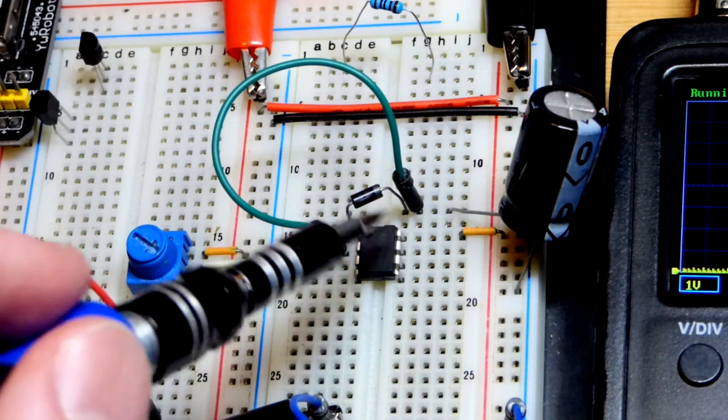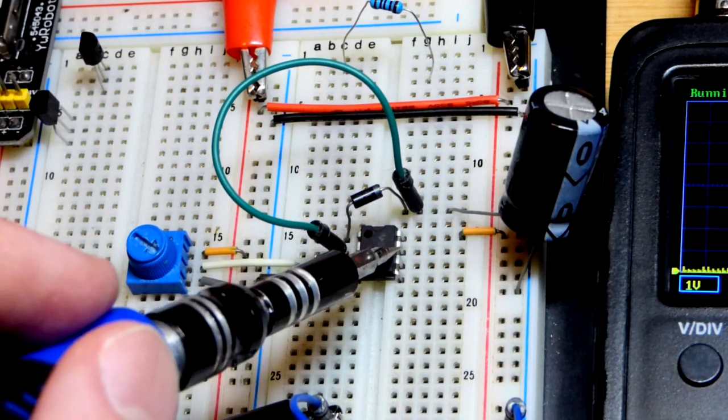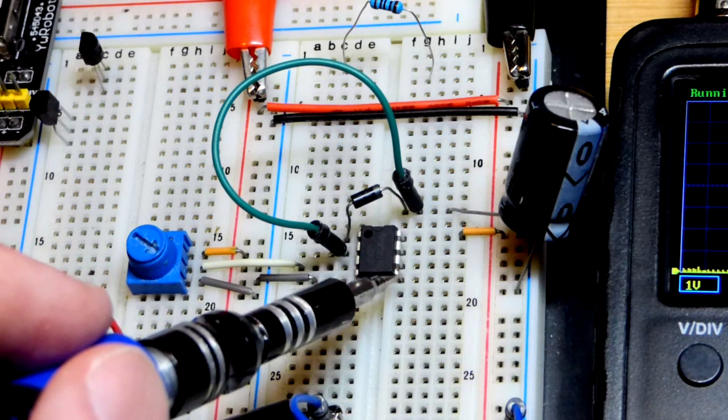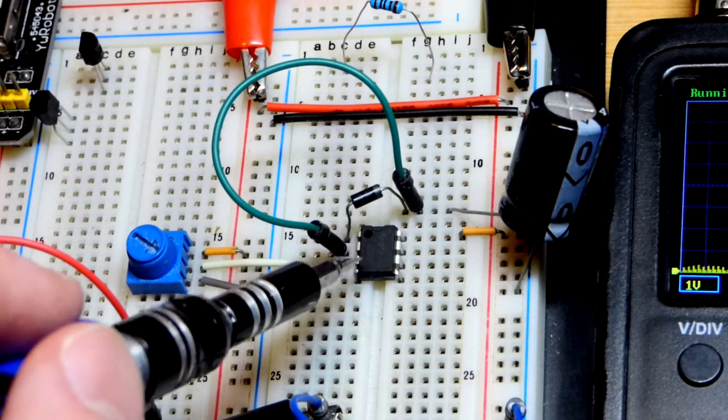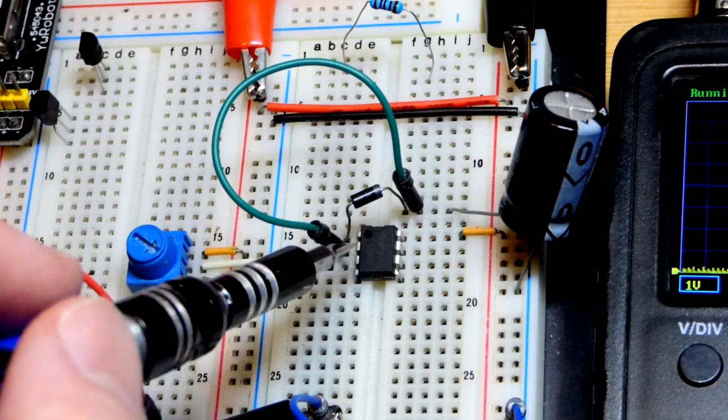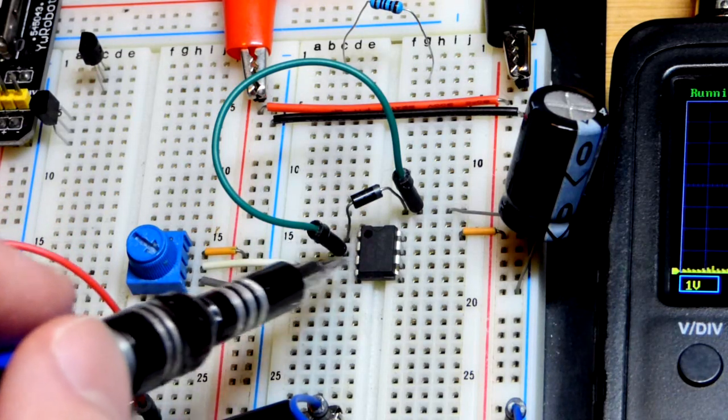There's an op amp over here that's a little easier to see right now. There's the output, the inverting input, non-inverting input. So the wiring is the same here except it's shuffled up one. So we got output, inverting input, and then non-inverting input.